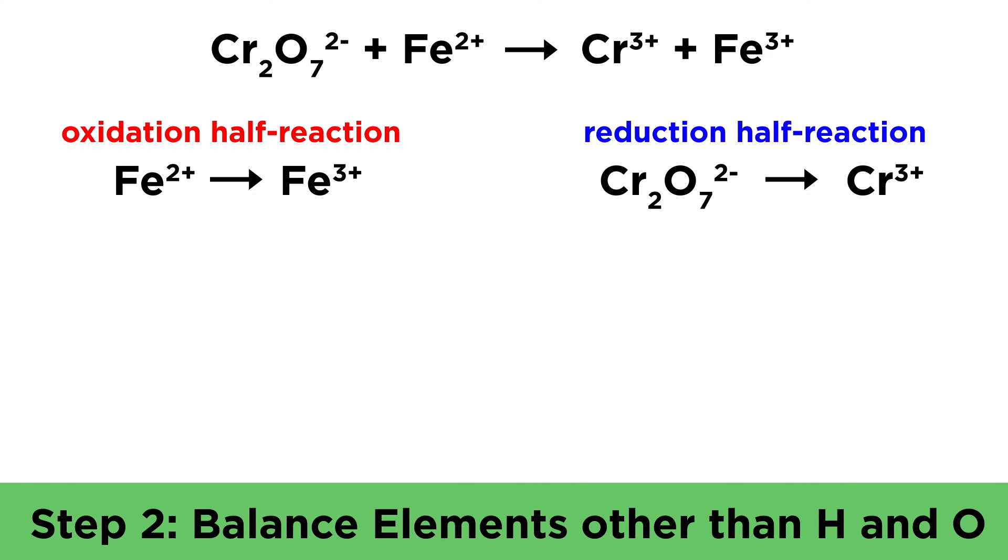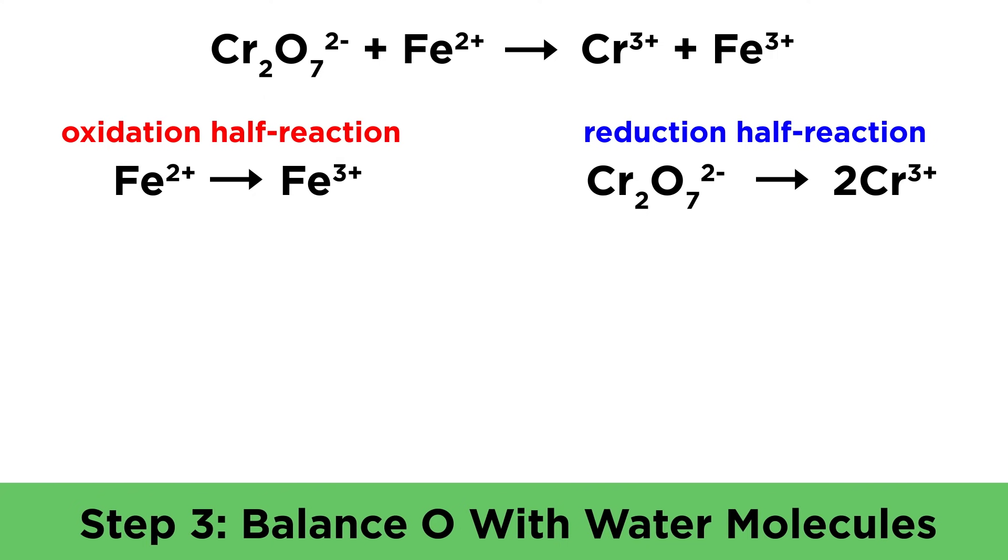Now we must balance each half reaction, starting with elements other than hydrogen or oxygen. We can see that for the reduction, we need to put a two here to get two chromium atoms on each side. Next, we balance oxygen by adding water molecules. We have seven oxygen atoms on the left, so we need to add seven water molecules to the right, since there is one oxygen per molecule.